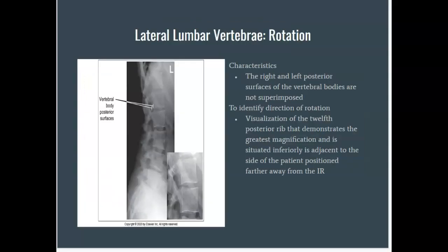Let's talk about identification of rotation in a lateral L-spine projection. Rotation can be detected on a lateral lumbar projection by evaluating the superimposition of the right and left posterior surfaces of the vertebral bodies. On a non-rotated lateral projection, these surfaces will appear superimposed as if they were one. However, on rotation, the posterior surfaces are not superimposed — one is demonstrated anterior to the other.